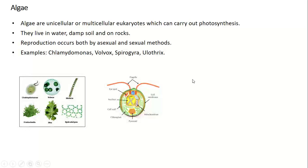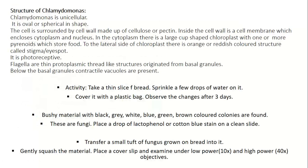Here is the structure of Chlamydomonas, showing flagella, eyespot, nucleus, cell wall, chloroplast, pyrenoid, mitochondria, and cell membrane. Chlamydomonas is unicellular and oval or spherical in shape. The cell is bounded by a cell wall made of cellulose or pectin. Inside the cell wall is a cell membrane enclosing cytoplasm and nucleus. In the cytoplasm, there is a large cup-shaped chloroplast with one or more pyrenoids which store food. To the lateral side of the chloroplast is an orange or reddish structure — the stigma or eyespot — which is photoreceptive. Flagella are thin, protoplasmic, thread-like structures originating from basal granules, below which contractile vacuoles are present.